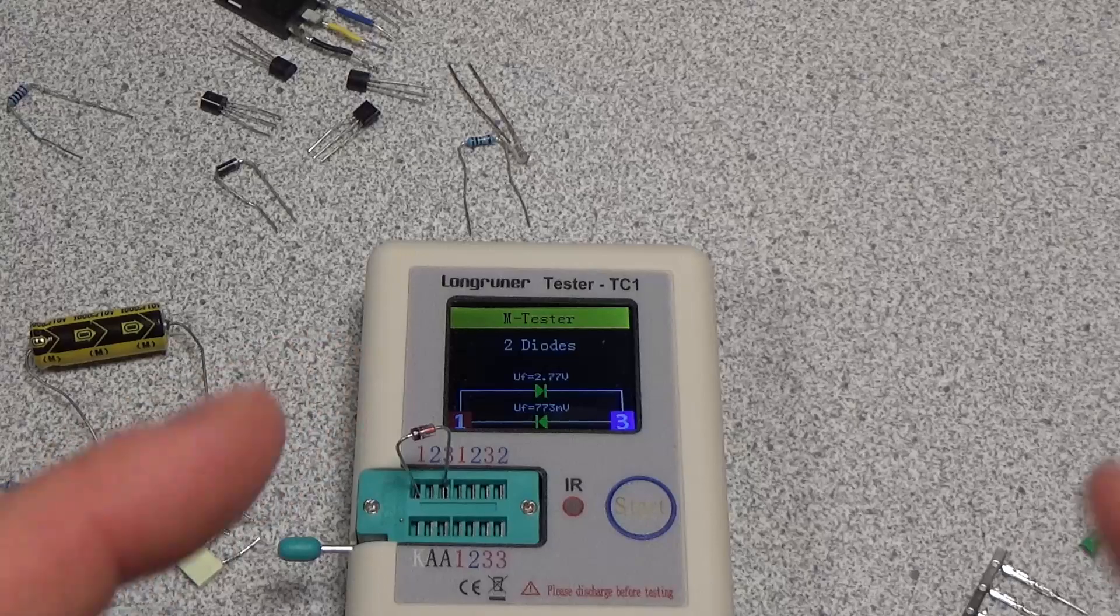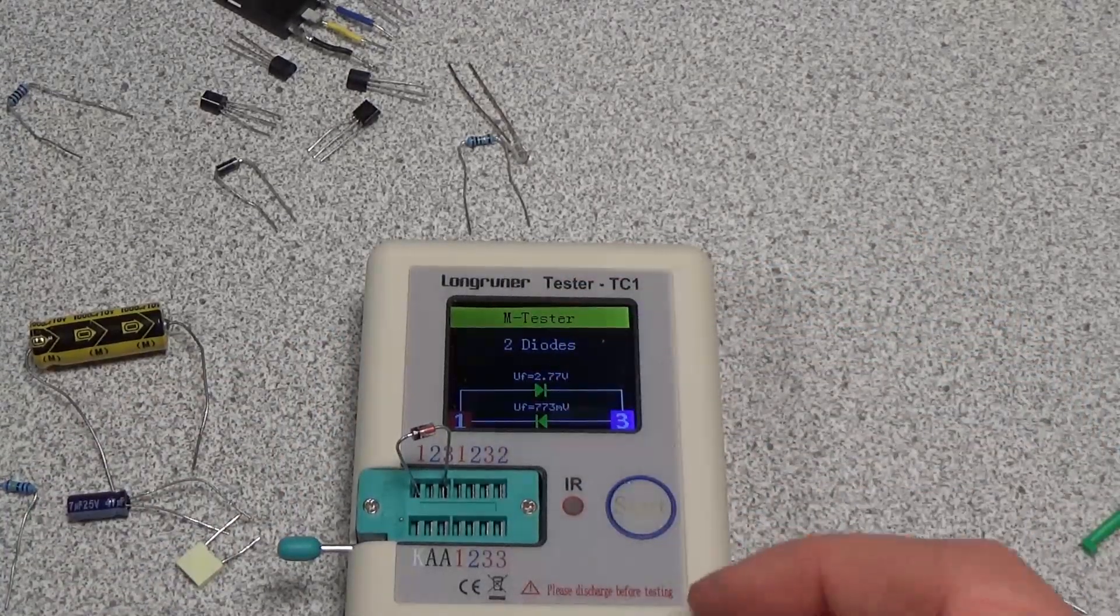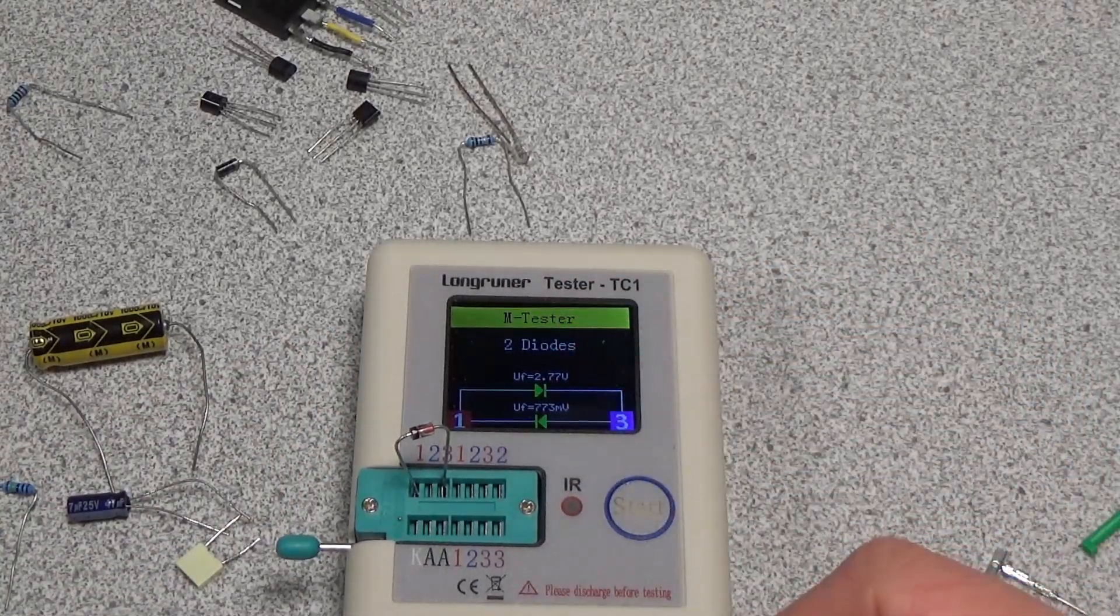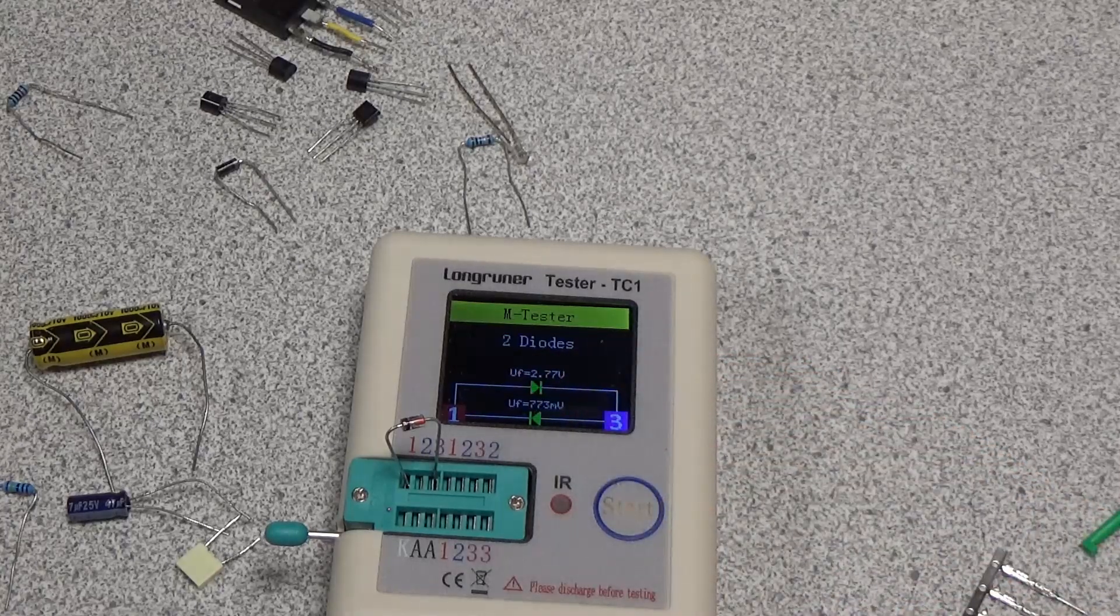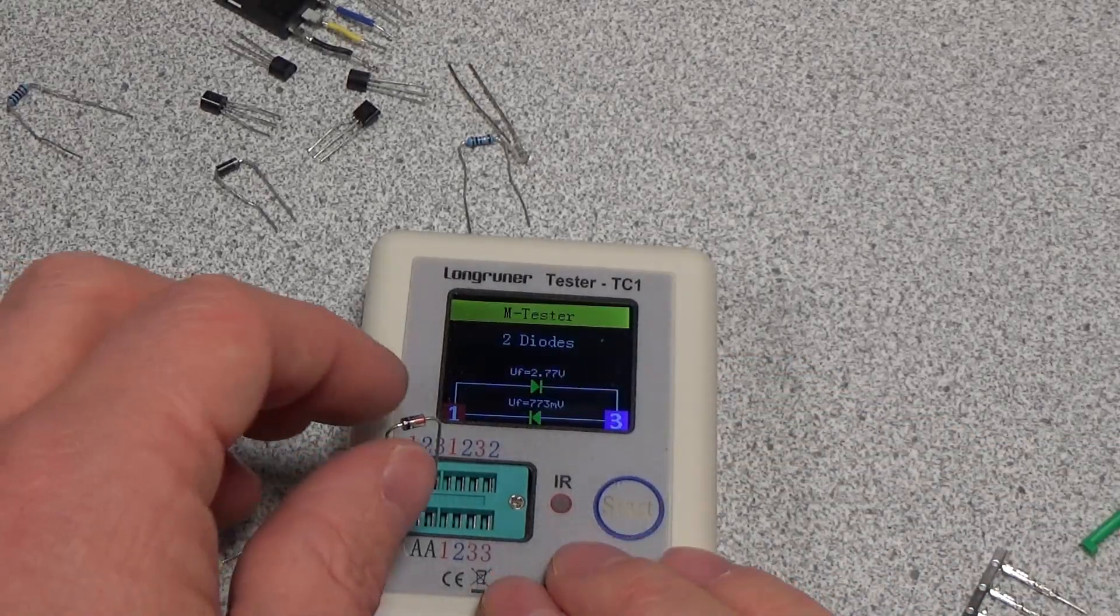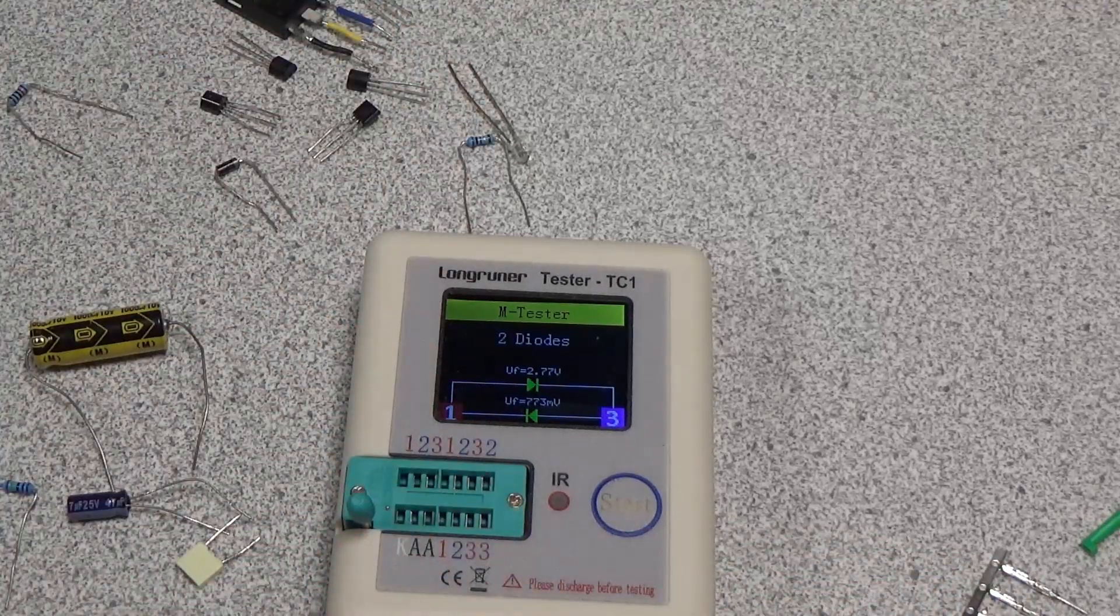Let's check this big diode, see what this one gets. Let's see if this comes up with the zener. It does! So this actually did detect two diodes. It got a forward voltage of 2.77 and a forward voltage of 773 millivolts. So that's pretty cool. So up to three volts it's able to detect that. That's great.